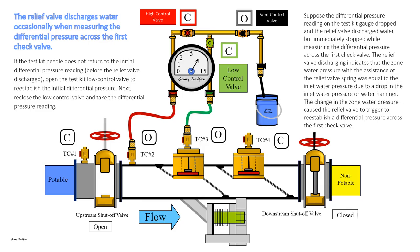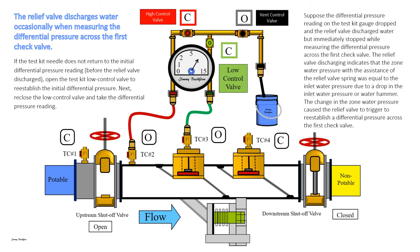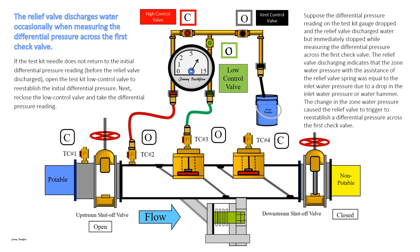The relief valve discharges water occasionally when measuring the differential pressure across the first check valve. Suppose the differential pressure reading on the test kit gauge dropped and the relief valve discharged water but immediately stopped while measuring the differential pressure. The relief valve discharging indicates that the zone water pressure, with the assistance of the relief valve spring, was equal to the inlet water pressure due to a drop in inlet water pressure or water hammer. The change in zone water pressure caused the relief valve to trigger to re-establish a differential pressure across the first check valve. If the test kit needle does not return to the initial differential pressure reading before the relief valve discharged, open the test kit load control valve to re-establish the initial differential pressure. Then re-close the load control valve and take the differential pressure reading.